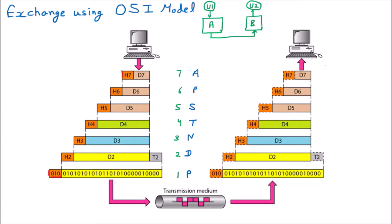The data is received by you, and in between, all seven layers of the OSI model are working at your end as well as at my end, with a transmission medium in between. On the left-hand side is my system from which I am transferring data to you, and on your side you are receiving the data.